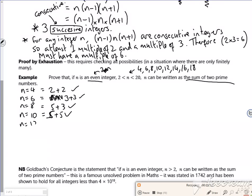n equals 12 could be 5 plus 7. n equals 14 could be 7 plus 7. n equals 16 could be 13 plus 3.